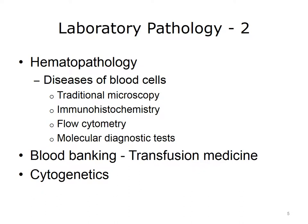Another division of pathology is hematopathology, or the study of blood cell diseases. Blood cells can be examined using traditional microscopy or through more sophisticated techniques. Immunohistochemistry, or IHC, is the process of localizing antigens such as proteins in the cells of a tissue by exploiting the principle that antibodies bind specifically to antigens within the tissue itself. Flow cytometry is a technique for counting and examining microscopic particles of cells and chromosomes by suspending them in a stream of fluid and passing them through an electronic detection mechanism. This process allows the simultaneous analysis of physical and chemical characteristics of thousands of particles per second and is used in the diagnosis of disorders such as blood cancers.